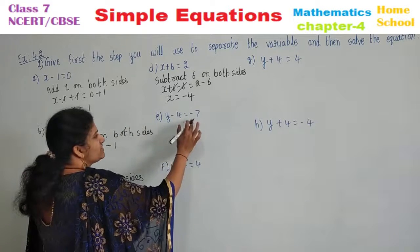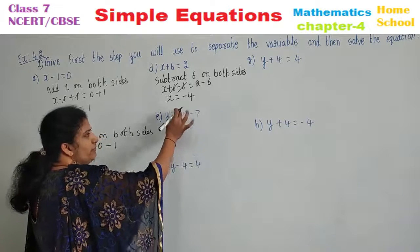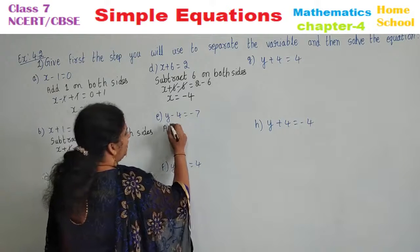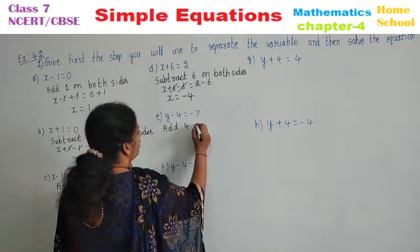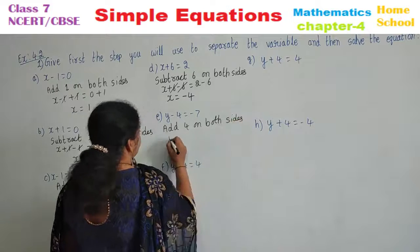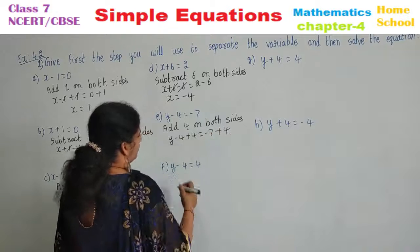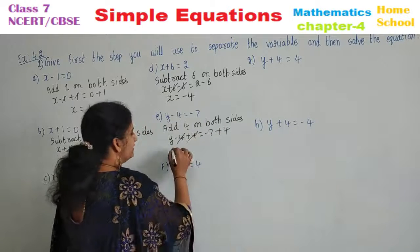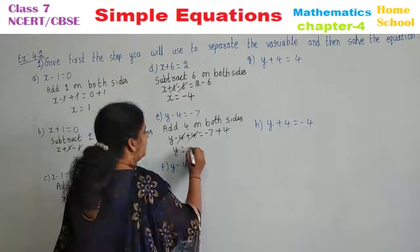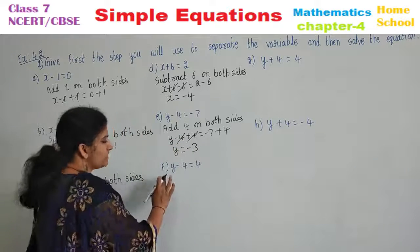Sub-question e: y minus 4 equals minus 7. Other than the variable, you have minus 4; its opposite is plus 4, so add 4 on both sides. y minus 4 plus 4 equals minus 7 plus 4; minus 4 plus 4 cancels, so y equals minus 7 plus 4, which is minus 3. The value of y is minus 3.